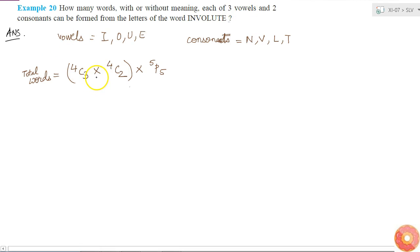Let me find the value of this. 4C3 will be 4 factorial by 4 minus 3 which is 1 factorial times 3 factorial, times 4C2 which is 4 factorial by 2 factorial times 2 factorial, times 5P5 will be 5 factorial by 5 minus 5 factorial.